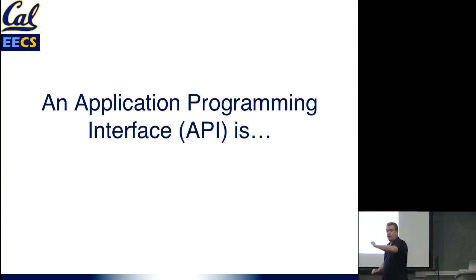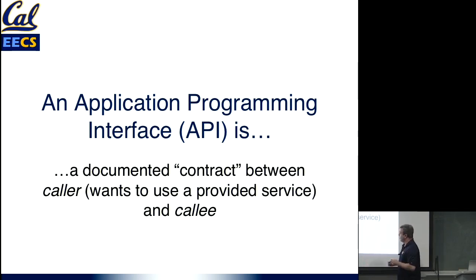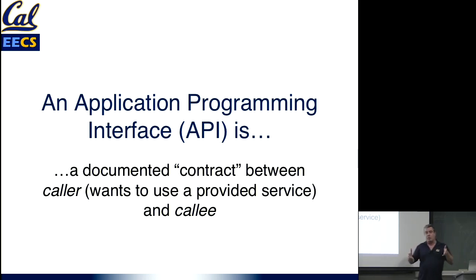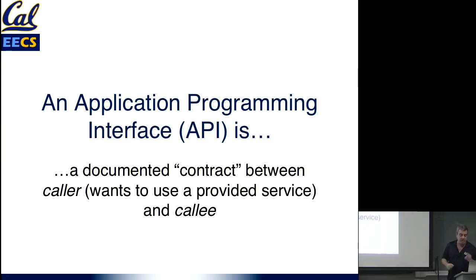Application Programming Interface suggests that it is about programming and about an interface. It is a contract, in a sense, between someone who wants to make use of a service and someone who provides that service — or between a caller and a callee. If you've ever programmed using libraries in Java or Python, the library documentation is basically API documentation. It says, for this library function, here's how you call it, here's what the arguments have to be, here's the possible return values, and here are the exceptions that might be raised if something goes wrong. So basically, it's a contract saying: if you want to use my service, here's what you can do, here's how you do it, and here's what could go wrong.